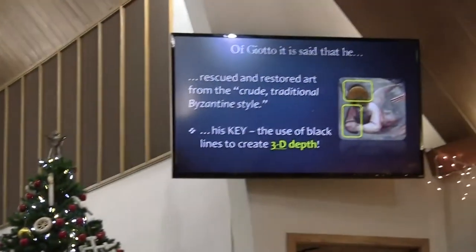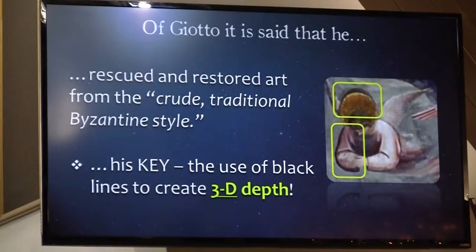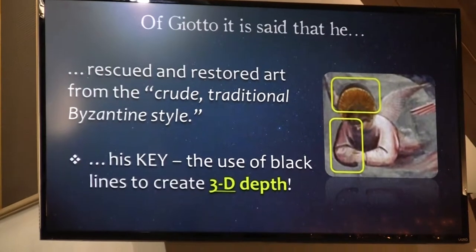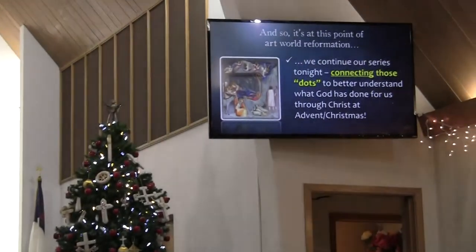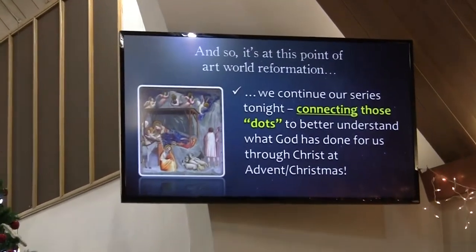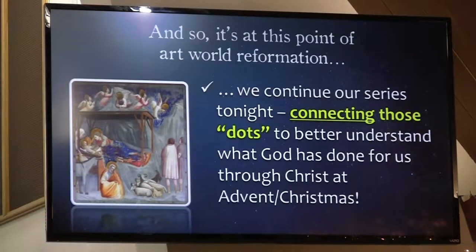It was ultimately said that Giotto rescued and restored art from what was called the crude traditional Byzantine style. He softened things up — things weren't so stilted, so driven by rules. His key contribution was that he finally decided it was time to make images pop off the canvas, pop off the wall. He began to use elements that would create a 3D effect with his characters. And it's at this point that we continue tonight in this series of connecting the dots — taking different pieces of artwork and seeing what those things have to do with our faith.